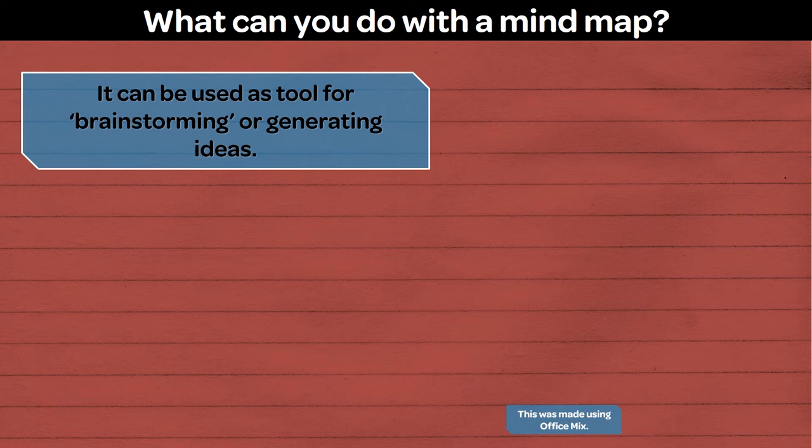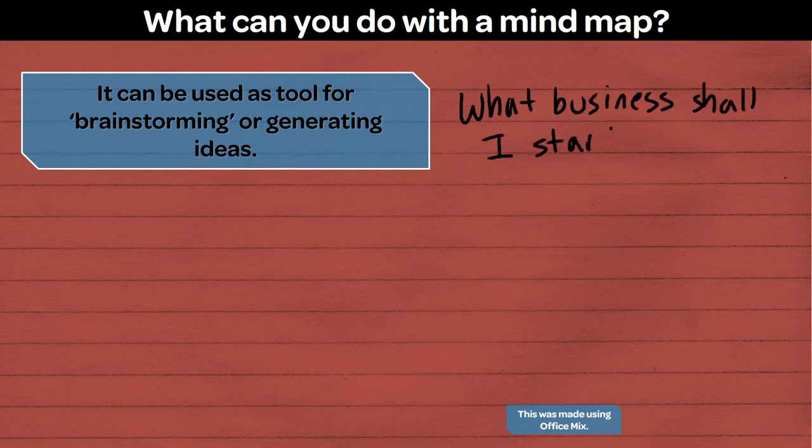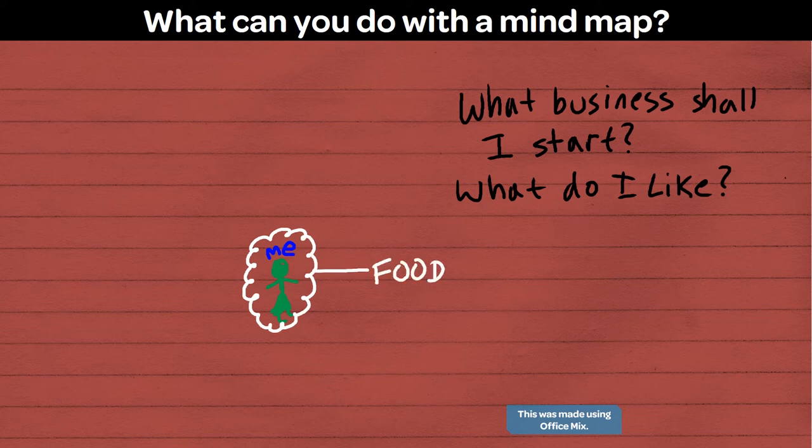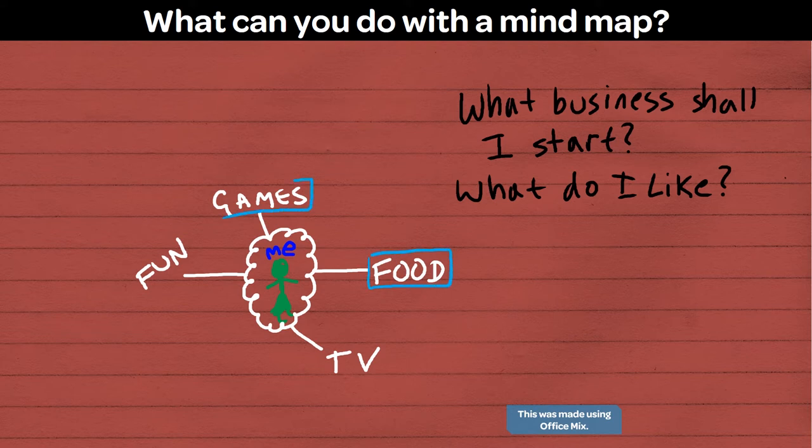So, what can you actually do with a mind map? Well, a simple use for it is brainstorming or generating ideas. Let's say, for example, you're trying to start a business and you don't really know what business you want to start. You can use a mind map to start getting those ideas onto paper. If I was starting a business, I would start with the question, what do I like? And then I would go from there. So in the middle of the mind map, I'd start with me. And then I'd start having branches saying what things I like. Food, fun, television, games. I might decorate the mind map a little bit. Start using different colors, different colored bubbles. And then, from each topic, I would add branches with subtopics coming off them.